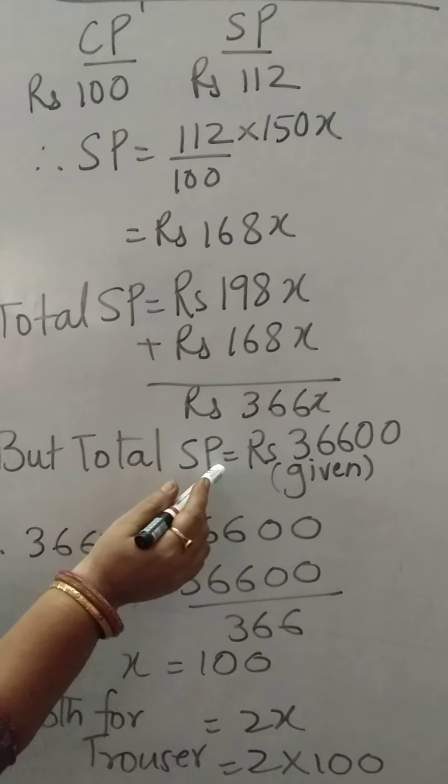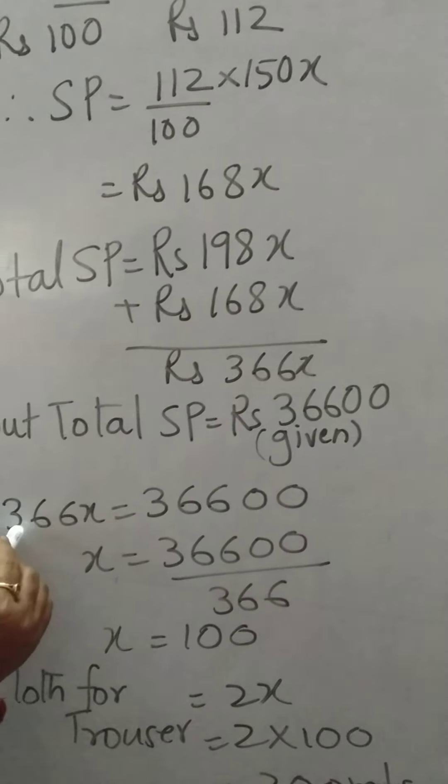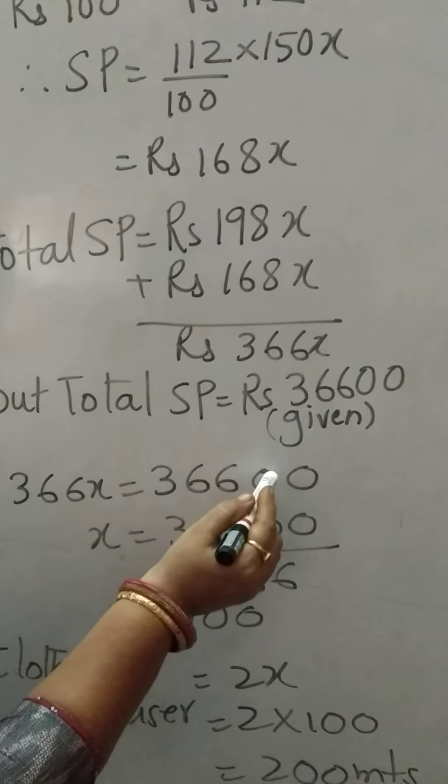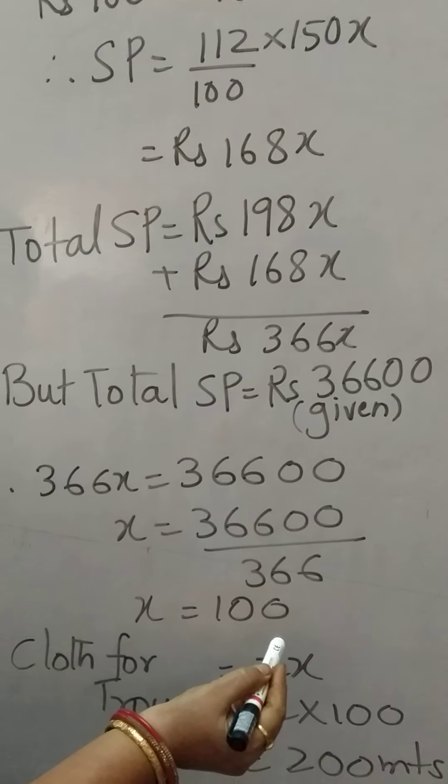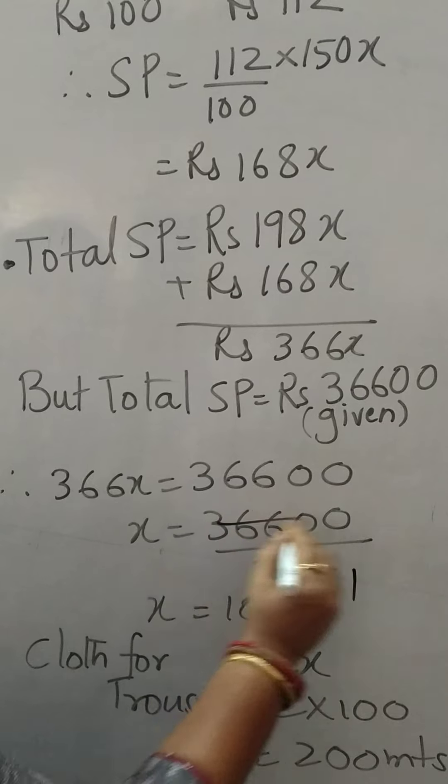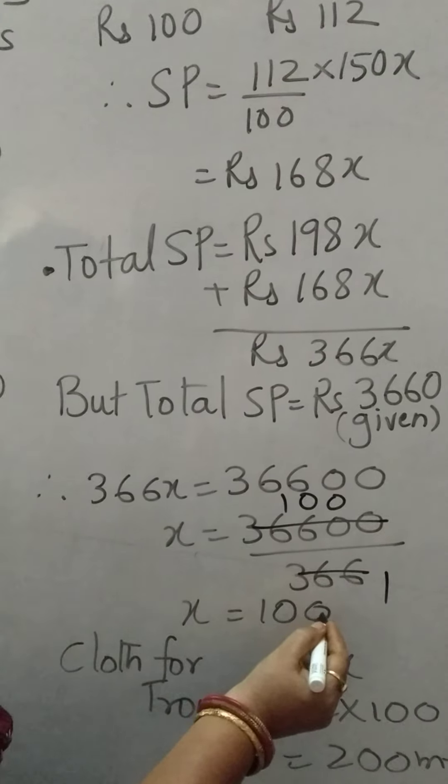But total SP is equal to rupees 36,600. So 366x equal to 36,600. So x will be, when you cancel, ones are 10, 100. So you get x equal to 100.